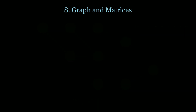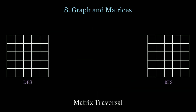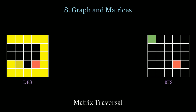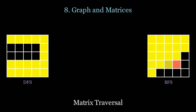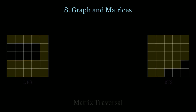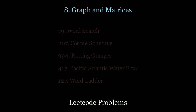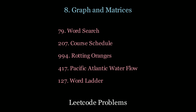Now let's take a look at matrices. In matrices we also have DFS and BFS. DFS is similar to graphs where we visit each node and find the longest path. In BFS we visit the children nodes first. If you want more practice, look at the following LeetCode questions.